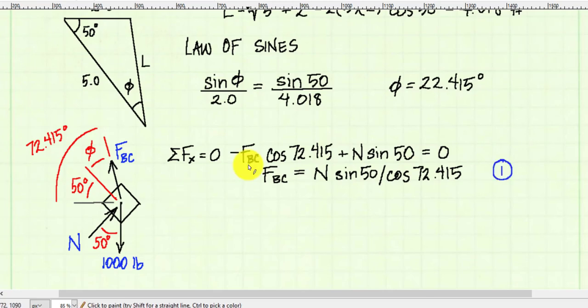Summing forces in the x-direction, I have the horizontal component of force BC. It's going to the left, so I'll say that's negative. Its component is force BC times the cosine of this angle here, plus the contribution in the x-direction from the normal force pointing to the right, times the sine of 50, given the way the angle is shown. Set it equal to 0, and I'll solve for FBC in terms of n and call that equation 1.